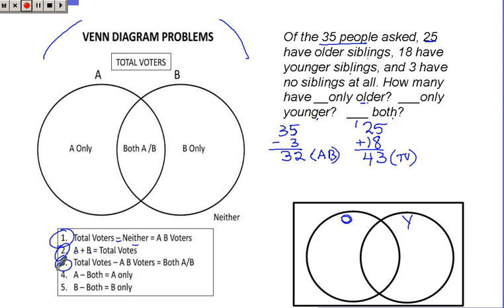Step three, I take the total votes, that's the last one, minus the AB voters. That was the first thing that I found, and that's going to be my number that's both A and B. It's going to give me a number for my Venn diagram right there, both A and B.